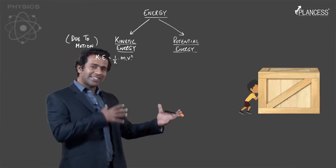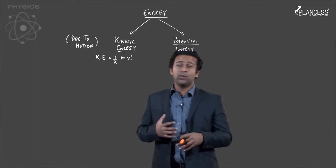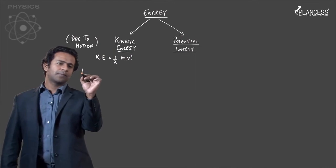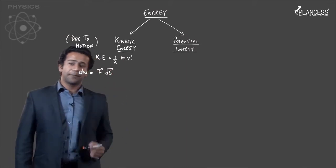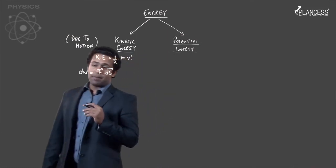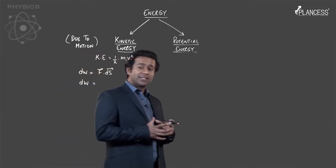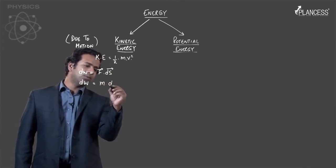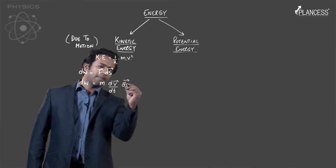Work done gets converted into kinetic energy. Let us try to find a relation between work done and kinetic energy. We know that the small amount of work done would be F dot ds. Now the force applied on a particle is equal to mass times acceleration, so we could say that force is mass into dV/dt.